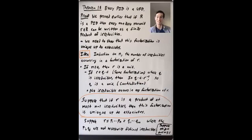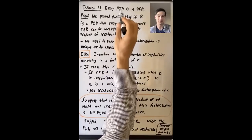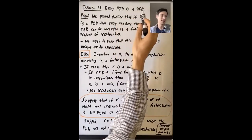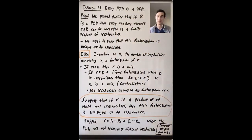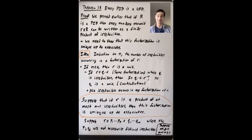In this last video of this lecture, we'll prove the main theorem of this section, which is that every PID is a UFD. What does it mean to be a UFD? That means that every non-zero non-unit satisfies two things: it can be factored into a finite product of irreducible elements,